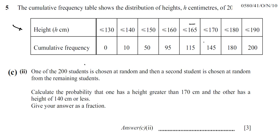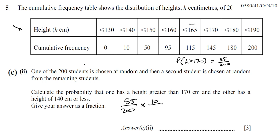There are 145 students out of 200 whose heights are 170 centimeters or less, which leaves 55 students with height greater than 170 cm. So the probability of the first student having a height greater than 170 cm is 55 over 200. Then the probability the second student has a height of 140 cm or less is 10 over 199, since only 10 students have heights of 140 cm or less and one student has already been picked.